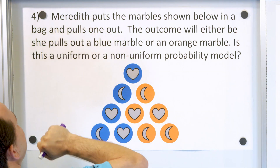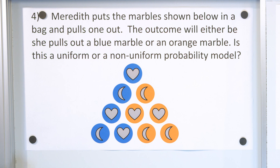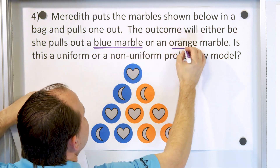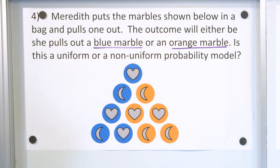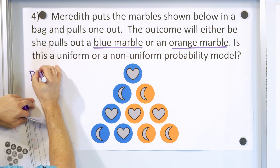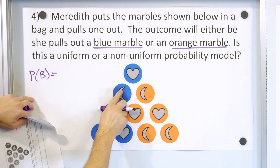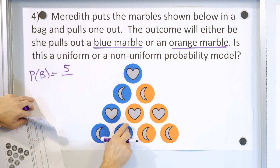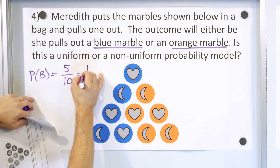Problem number four: Meredith puts these marbles in a bag and pulls one out. The outcome will either be that she pulls out a blue marble or an orange marble. We don't even care about the shapes — just blue versus orange. Is this a uniform or non-uniform probability model? The probability of pulling a blue marble: we have one, two, three, four, five of those out of a total of ten. Five out of ten reduces to one-half.